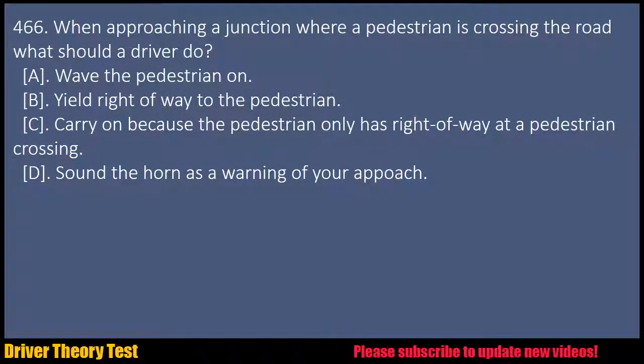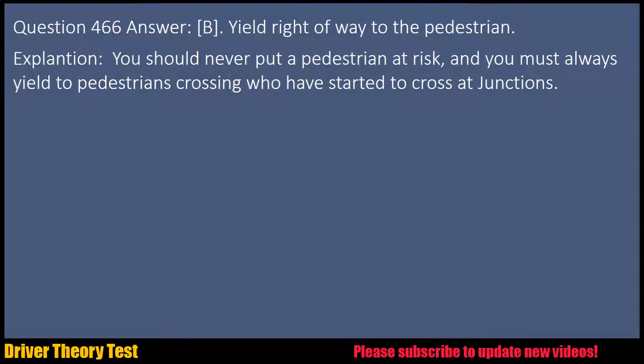Question 466: When approaching a junction where a pedestrian is crossing the road, what should a driver do? A. Wave the pedestrian on. B. Yield right-of-way to the pedestrian. C. Carry on because the pedestrian only has right-of-way at a pedestrian crossing. D. Sound the horn as a warning of your approach. Answer: B. Yield right-of-way to the pedestrian. Explanation: You should never put a pedestrian at risk and you must always yield to pedestrians crossing who have started to cross at junctions.